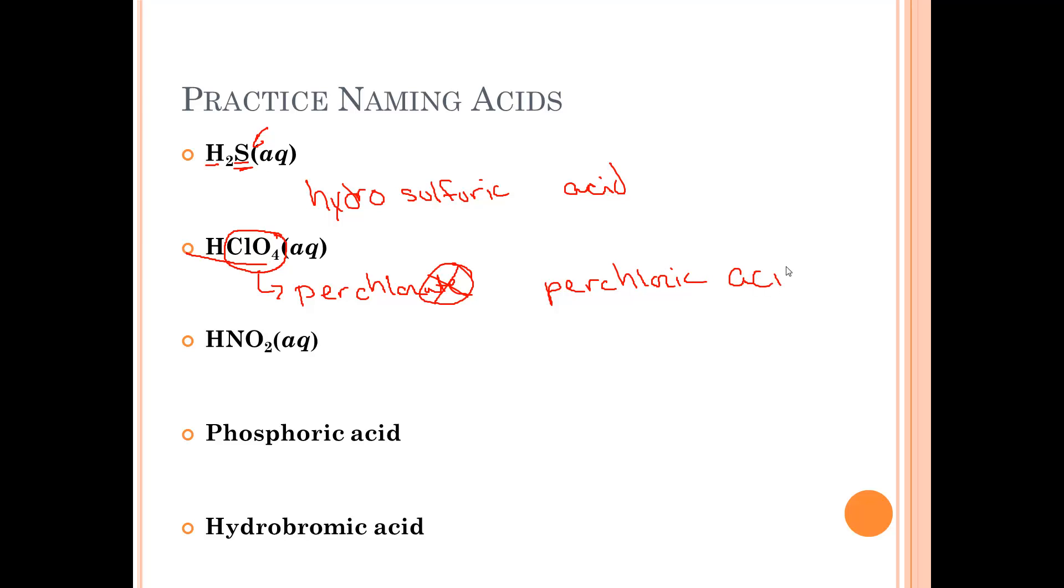NO2 is nitrite. Once again, we have a polyatomic ion here because we have more than two capital letters. So nitrite becomes nitrous.